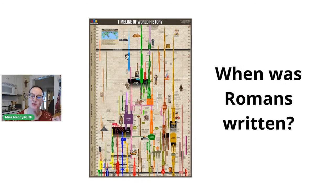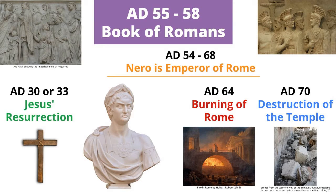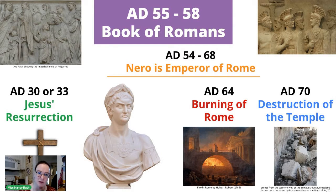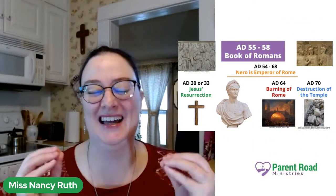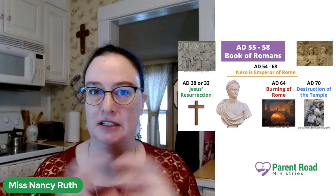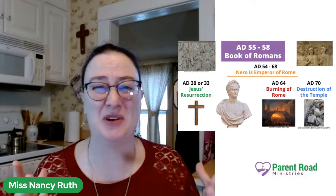When was the book of Romans written? The book of Romans was written somewhere between the years AD 55 and AD 58 — that means after Jesus. The Jesus resurrection was either in AD 30 or AD 33, so it was after that. The burning of Rome happened in AD 64, so it was before that. It was also before the destruction of the temple in Jerusalem. This was a time when Nero was emperor of Rome, which means it was a very dangerous time to be a Christian in the Roman Empire.